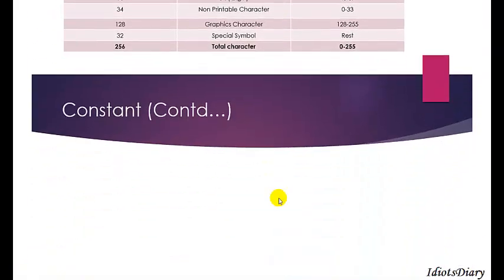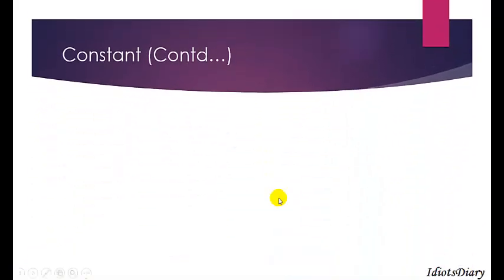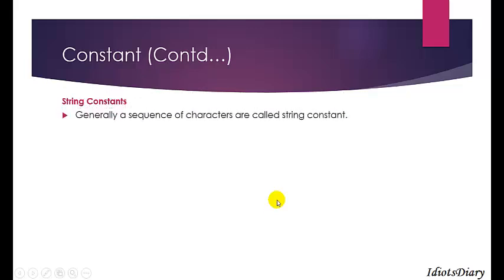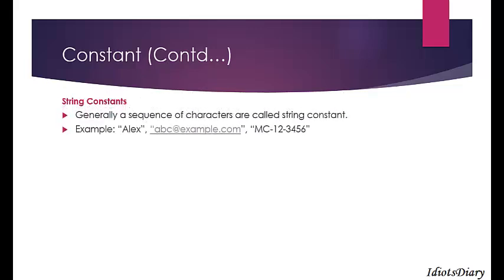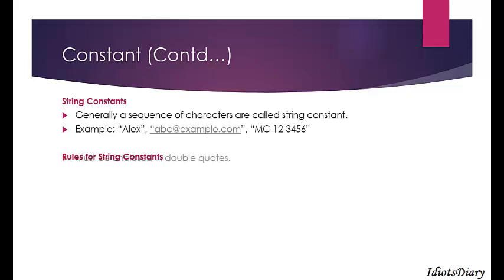The next type of scalar constants are string constants. Strings are generally called a sequence of characters — for example, your name, your email ID, your card number, and your phone number are some string constants. The rule for string constants is that they must be enclosed in double quotes.